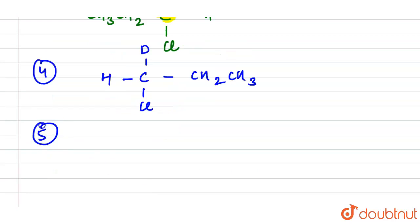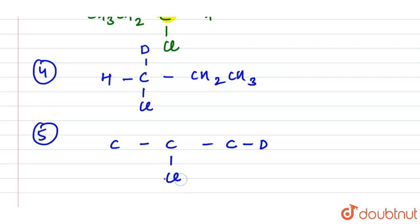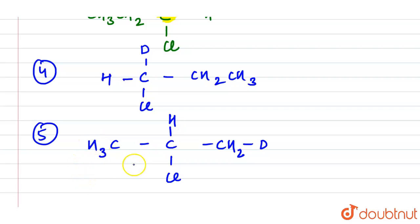For the fifth structure, we have three carbons where D is attached to one carbon and Cl to another. This gives a CH₂ group with two bonds remaining, along with H and CH₃. This carbon is also a chiral carbon with four different groups.